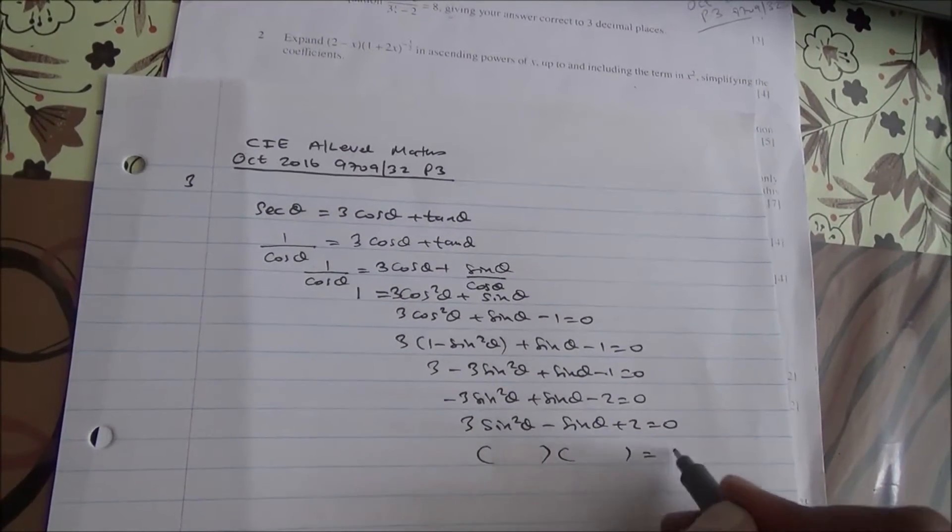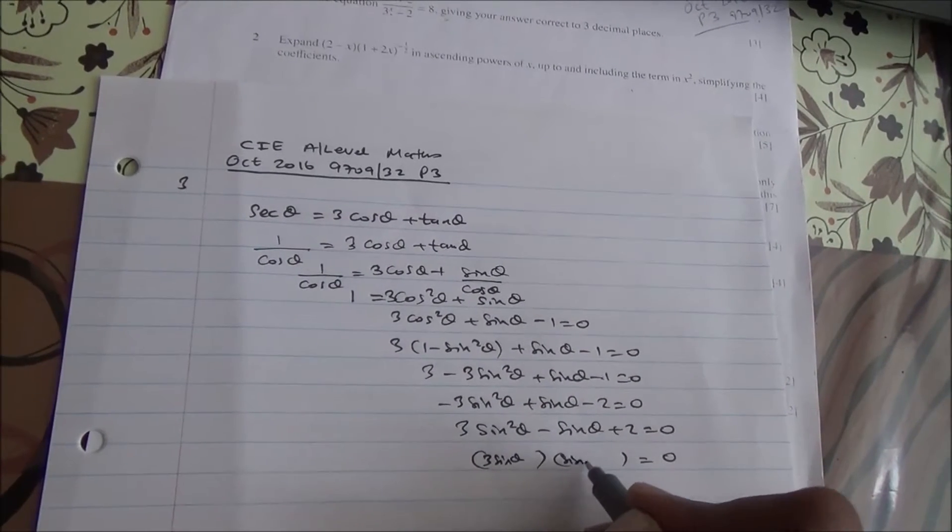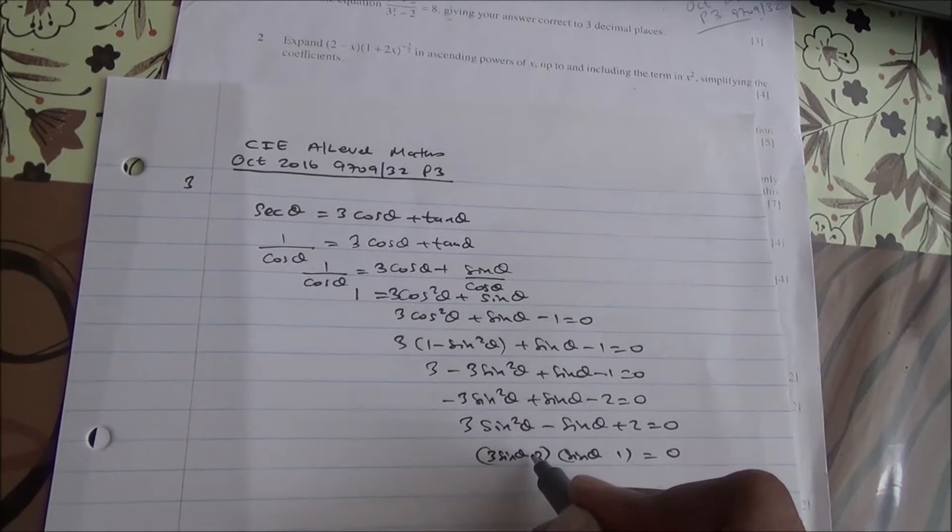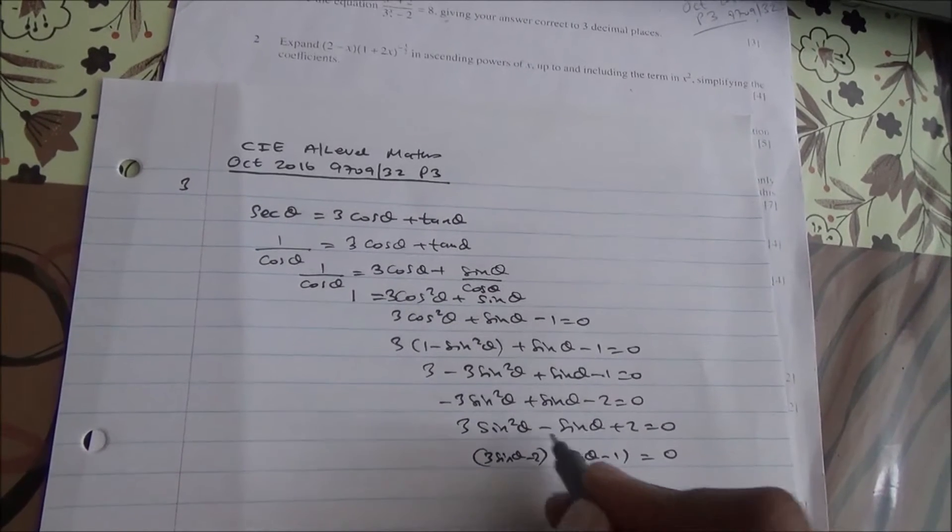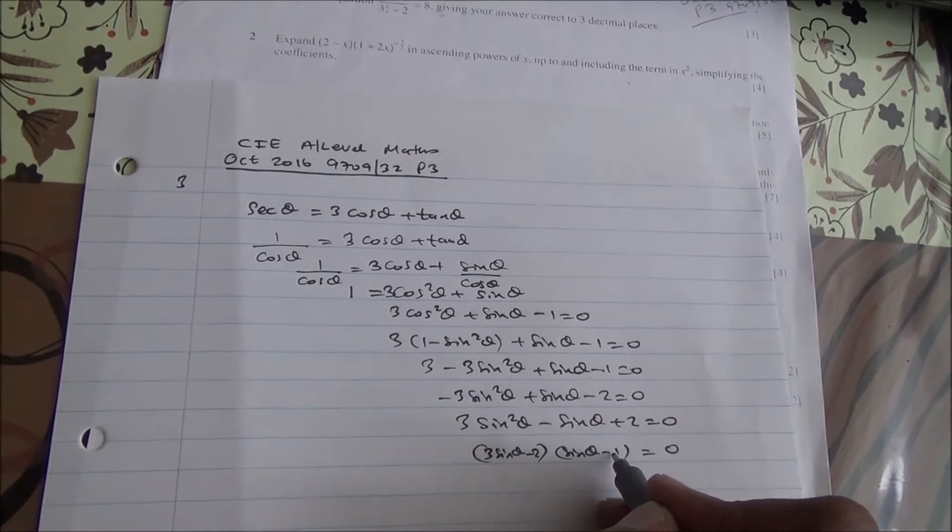We can factorize this expression. Looking at (3sin θ)(sin θ) with constants 2 and 1, we need minus signs to get -sin θ. So 3 times -1 gives -3sin θ.